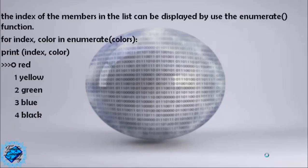The index of the members in the list can be displayed using the enumerate function. For example: for index, color in enumerate(colors): print(index, color). This gives: 0 red, 1 yellow, 2 green, 3 blue, 4 black.